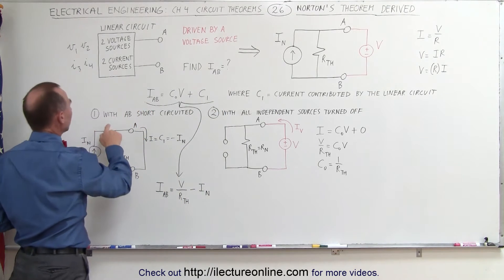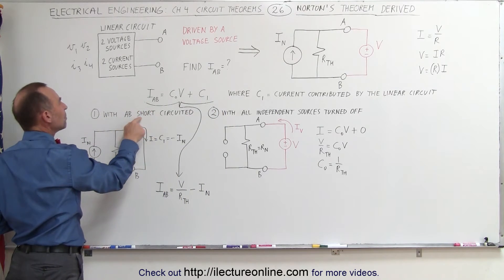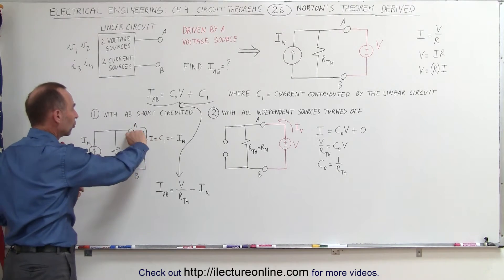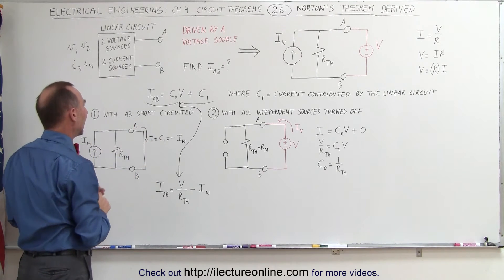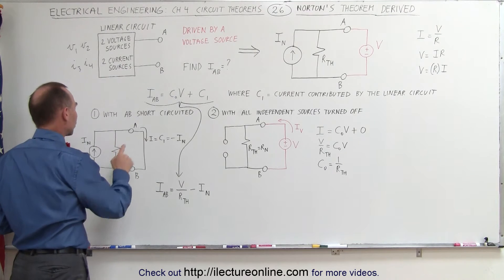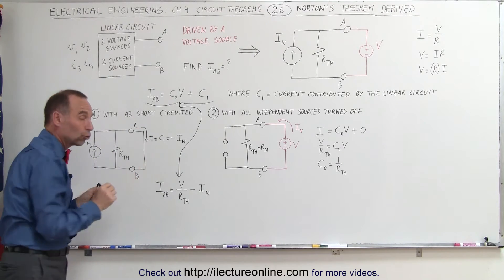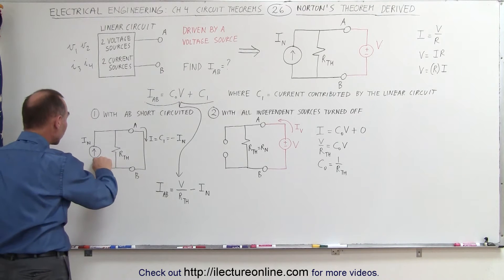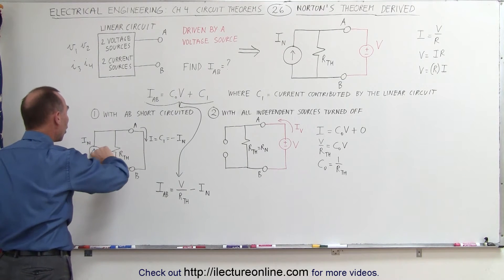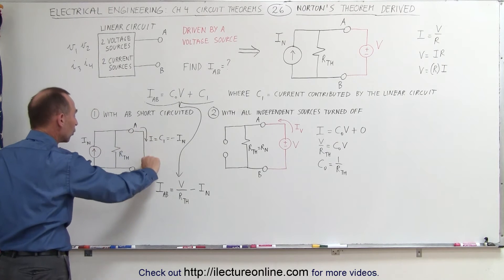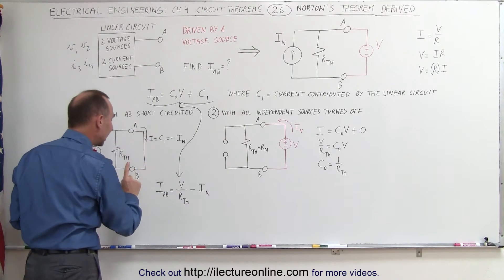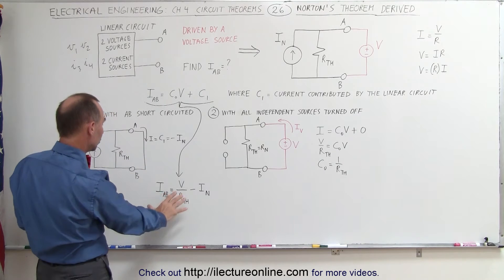First, we're going to find the current with A and B short-circuited. We replace the voltage source with simply a short-circuit and then determine what the current will be. If the terminals A and B are short-circuited, that means none of the current from the Norton current source is going to go to the resistor — all of it is going to go to the short-circuit.